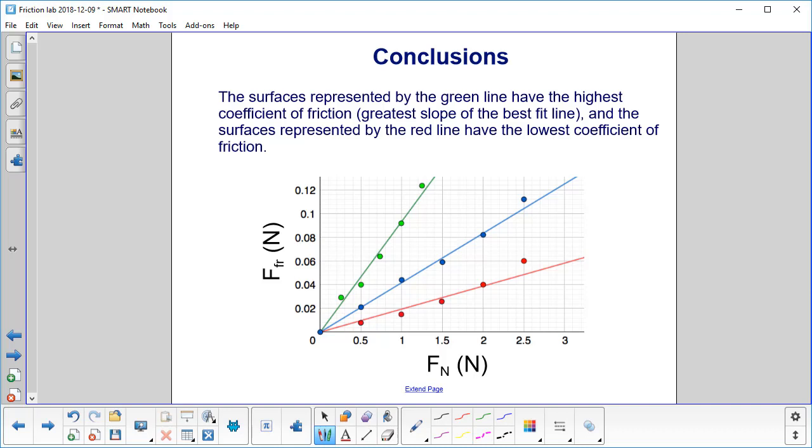The object-surface combination, represented by the green line, have the highest coefficient of friction. Why is that? Well, the coefficient of friction is the slope of the best fit line, and that one has the greatest slope. The surface-object combination, represented by the red line, have the lowest coefficient of friction. And, of course, the blue is somewhere in between.